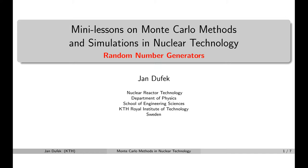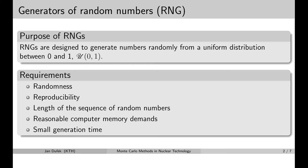Welcome back. This mini lesson is a small introduction into the field of random number generators. In Monte Carlo simulations we need to sample random values for a large number of random variables, such as the distance to the next collision, the number of fission neutrons, the energy of fission neutrons, and many other quantities.